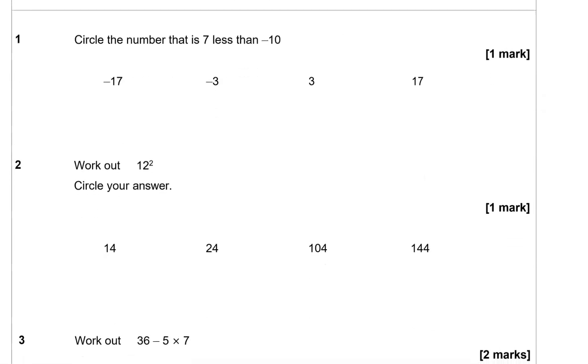Question one. Circle the number that is seven less than negative 10. So you could link this to temperature or being overdraft money. So if the bank account shows a balance of negative 10, being 10 pounds overdraft, and then you withdraw another seven pounds, that means the new balance will be negative 17 pounds, which is this option. Or, if temperature is negative 10 and it drops by another seven degrees, it's going to be negative 17 degrees after.